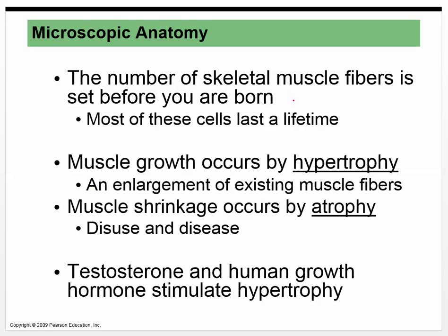The number of skeletal muscle fibers is set before you are born. Just as you start out with a certain number of brain cells and don't create more, you also have a set number of skeletal muscle fibers. When we say skeletal muscle fibers, we're talking about muscle cells — muscle fiber equals muscle cells — and most of these last a lifetime. That tiny little baby that comes out has as many muscle cells as it will ever have.